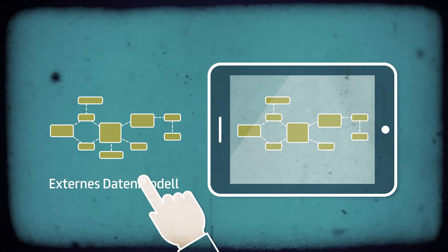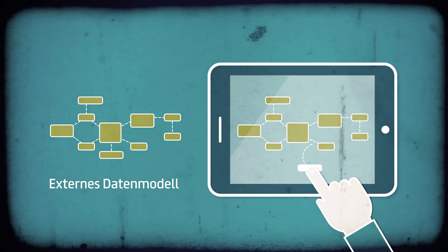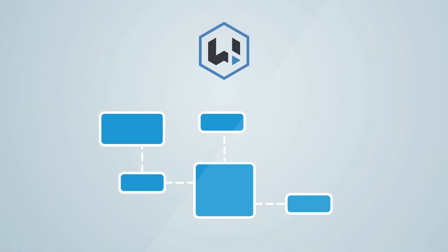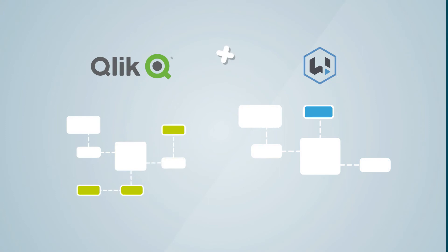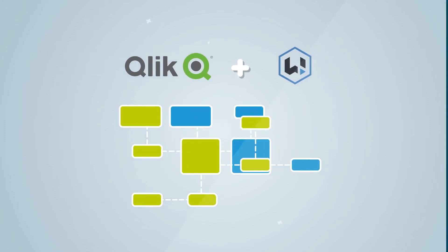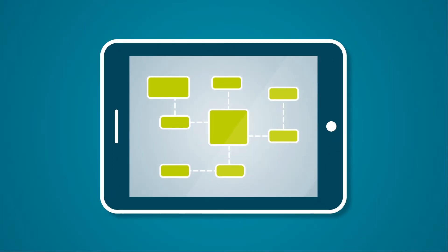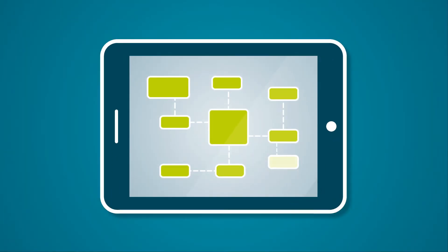Recreating data models is a thing of the past. Right uses the existing data model in Click. Therefore, no redundancy in data modeling is required.